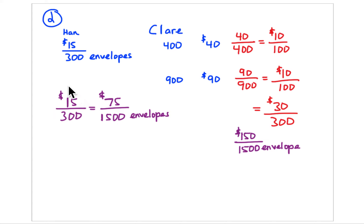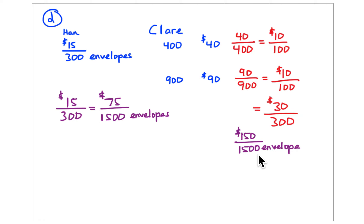Claire makes $30 for 300 envelopes. Multiply both by 5: 300 × 5 = 1,500 envelopes, and $30 × 5 = $150. So for 1,500 envelopes, Claire earns $150 — again twice as much as Han's $75.